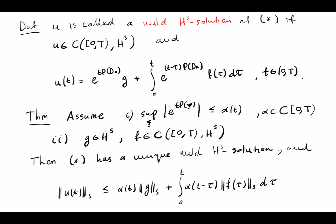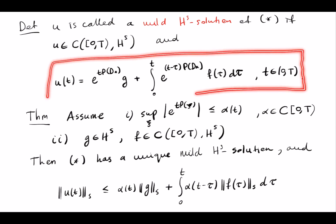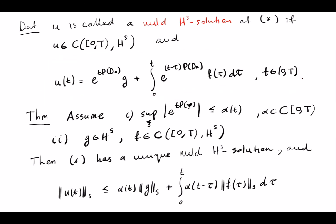The Duhamel formula motivates us to define a more general notion of solution called a mild solution. Because a strong solution satisfies the Duhamel formula, we use that formula to define the notion of mild solution — the only requirement is that u should be continuous, so in particular we don't need to take a time derivative. Under the same assumptions, the theorem states there exists a unique mild H^s solution satisfying a corresponding bound.